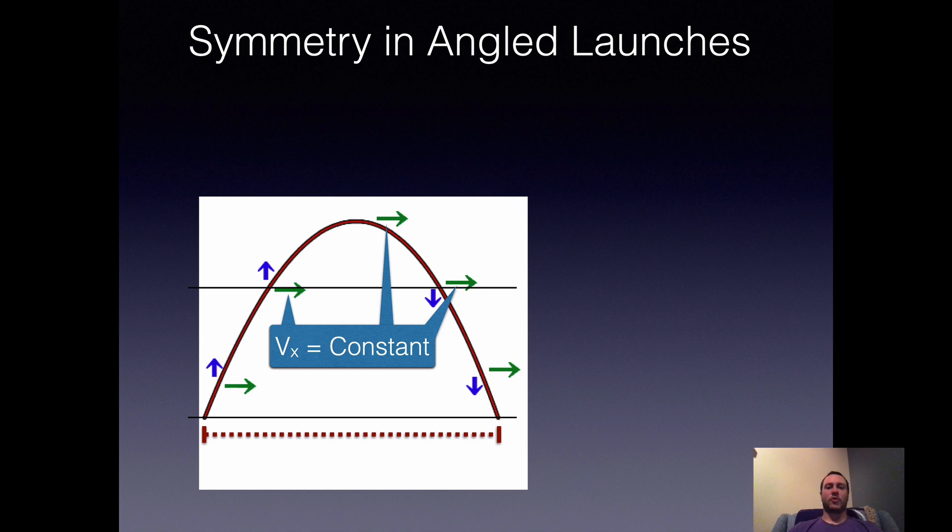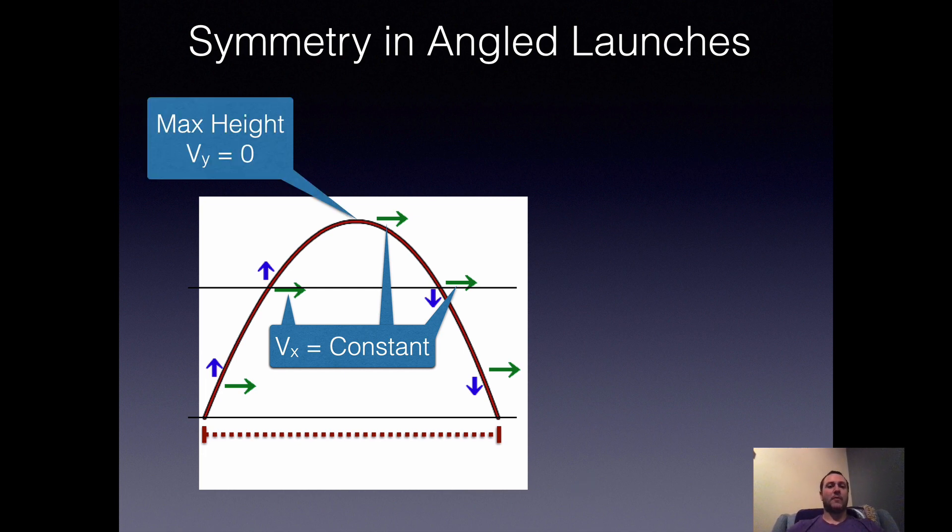That lateral motion remains constant. If you look at the green velocity vectors here that represent our horizontal velocity, note that those vectors remain pointing the same direction with the same magnitude. The arrows are the same length and they're all pointing to the right. That represents our constant horizontal velocity. At our maximum height, there is no blue vector, and the blue vectors here are representing our vertical velocities.